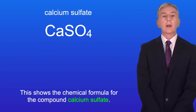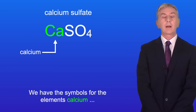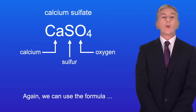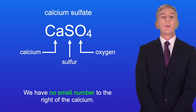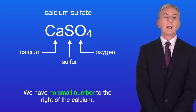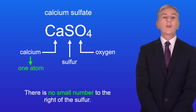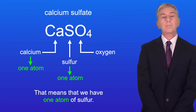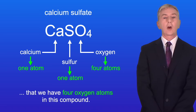This shows the chemical formula for the compound calcium sulfate. We have the symbols for the elements calcium, sulfur, and oxygen. There is no small number to the right of the calcium, so we have one atom of calcium. There is no small number to the right of the sulfur, so we have one atom of sulfur. And we have a small number four to the right of the oxygen, so that means we have four oxygen atoms in this compound.